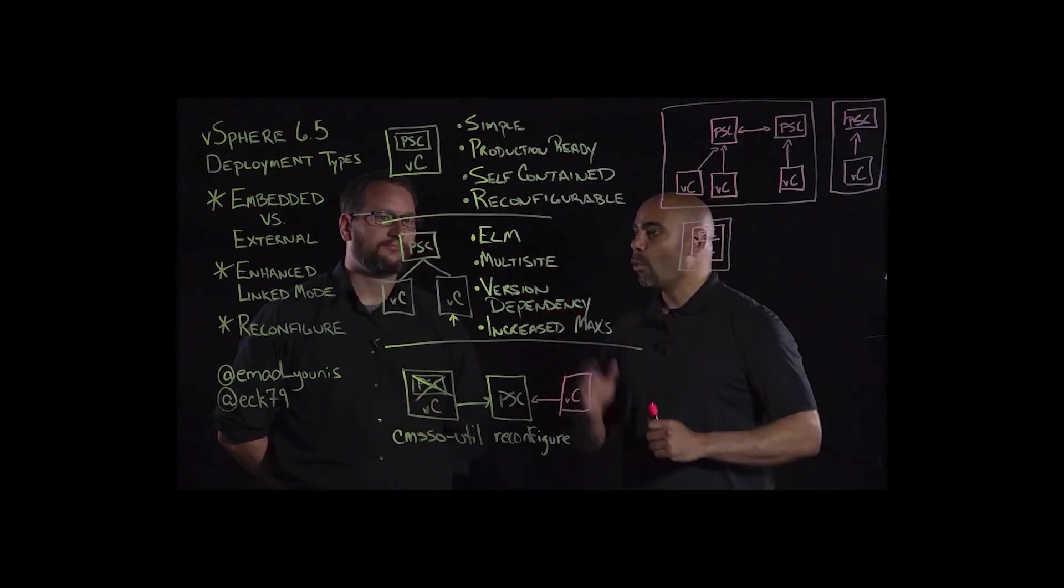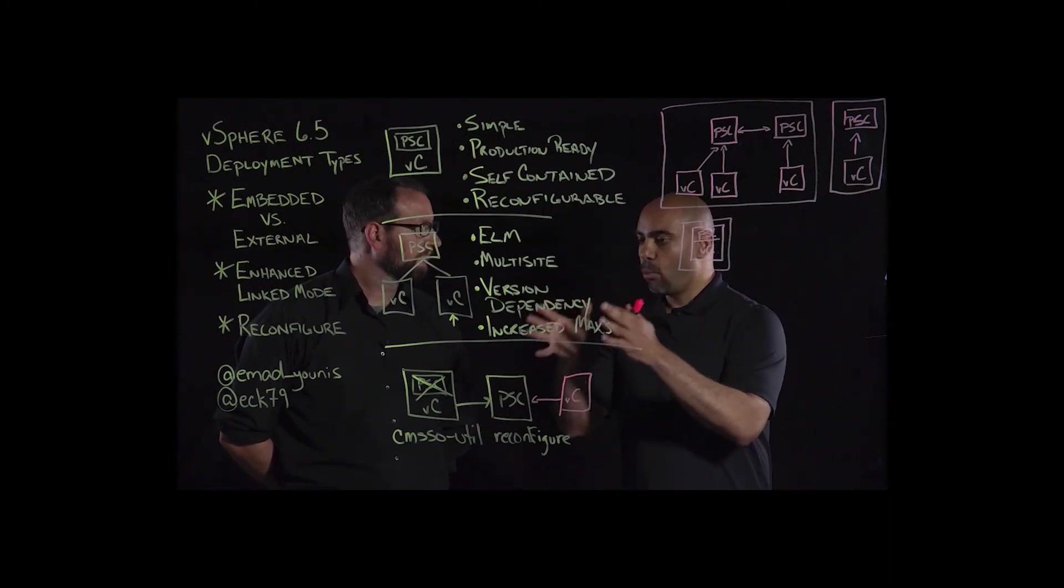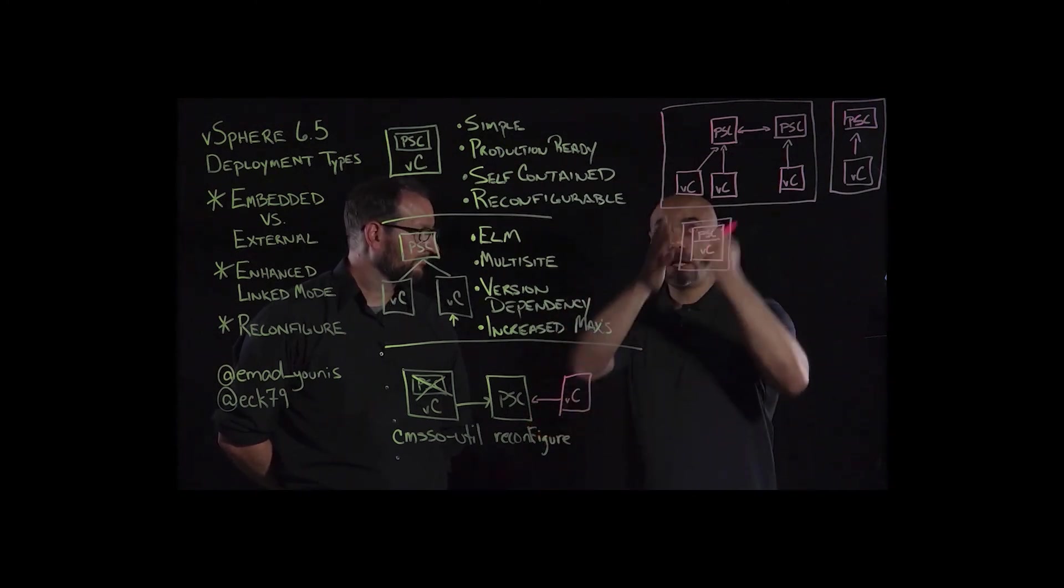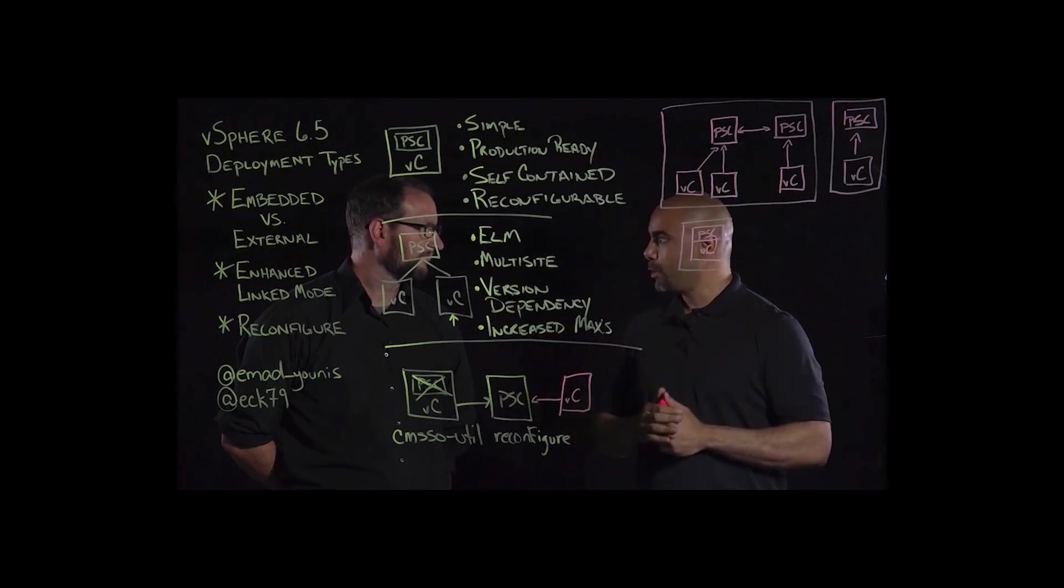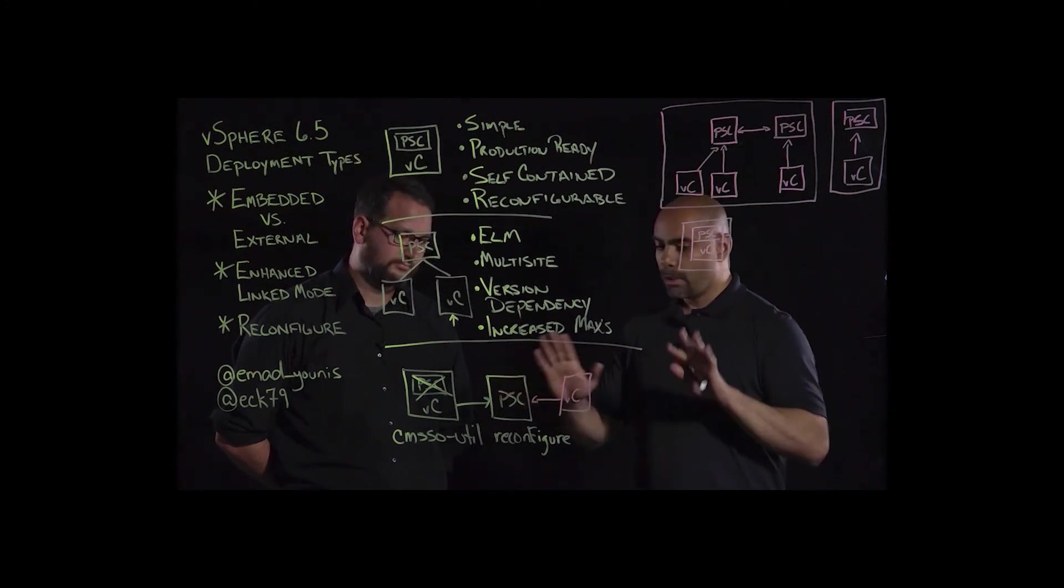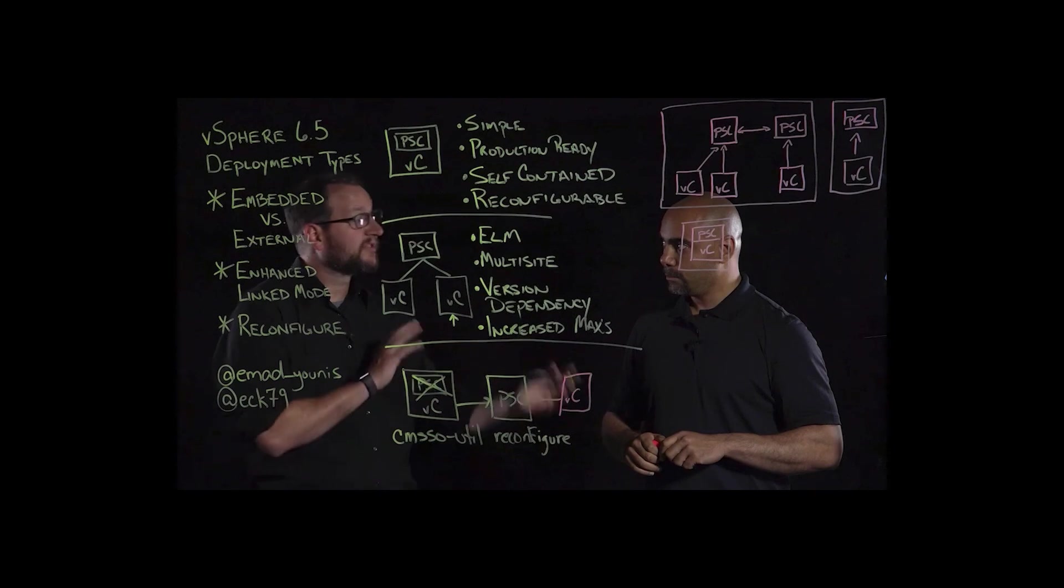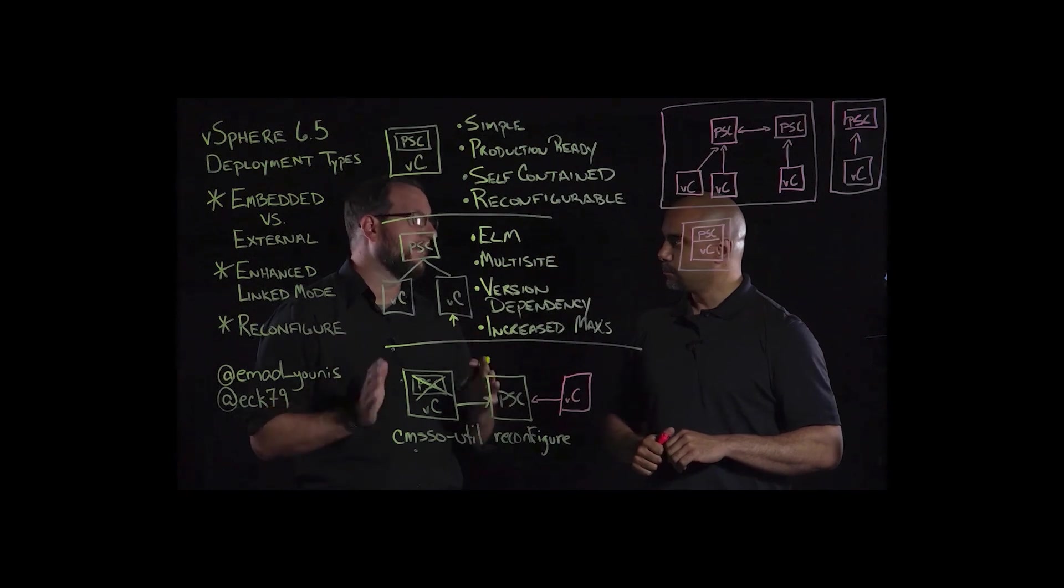As far as adding additional vCenters and additional PSCs and going into multi-site, which we'll talk about in another video. But you can see from what we've drawn, now we're enabled for enhanced linked mode by reconfiguring our embedded PSC out to an external deployment. To recap, the key here is understanding why you're deploying which deployment model. And then figuring out what is supported in regards to the maximums guide. Based off that, coming up with some sort of design of what your deployment is going to look like. And if you do happen to have an embedded deployment, you can externalize. The key, though, is what if I have multiple embeddeds? Can I link those guys?